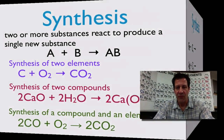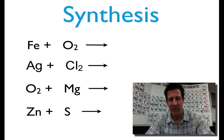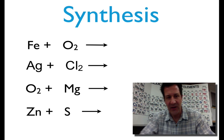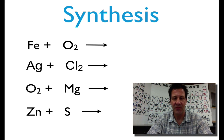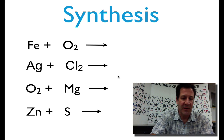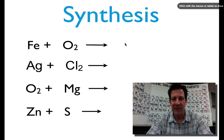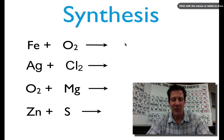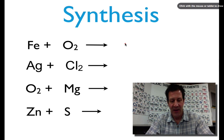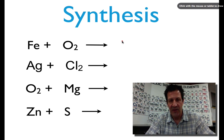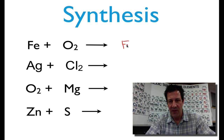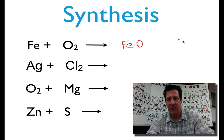Let's look at a few simple ones and see if we can complete the reaction. For simple synthesis reactions, you should be able to complete the chemical reaction. Here we have a synthesis reaction between iron and oxygen, and we know that our single product is going to be a compound containing both iron and oxygen.